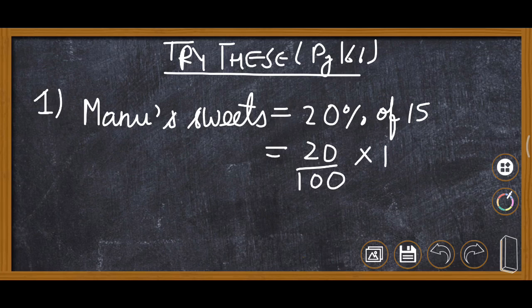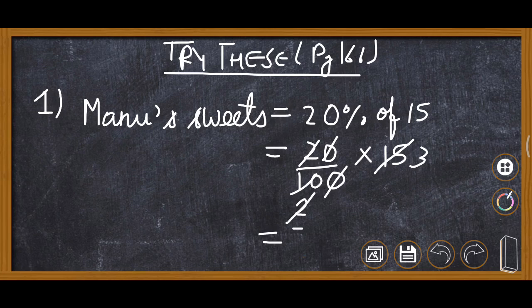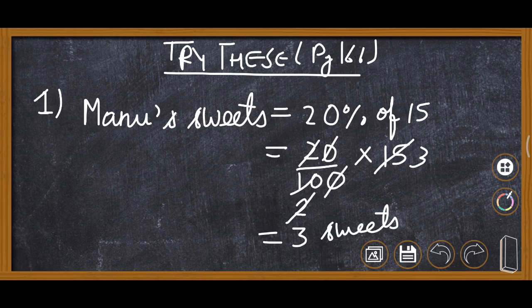Then 20 upon 100 into 15, remove 0 by 0, 5 threes are 15, 5 twos are 10, 2 ones are 2. Now it is 3. So 3 sweets will be given to Manu.